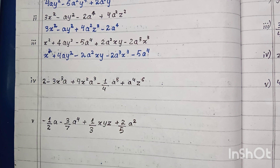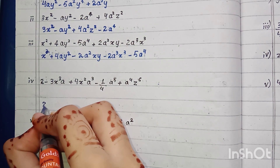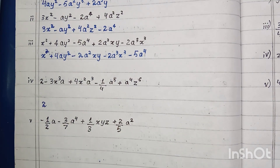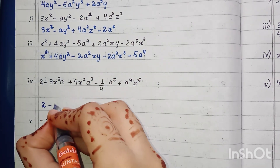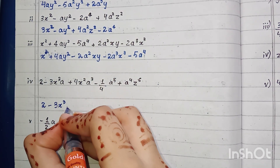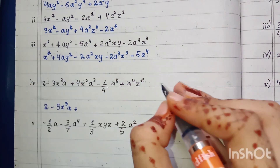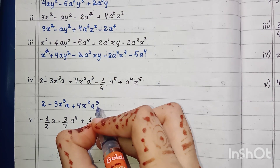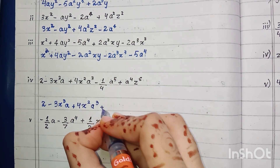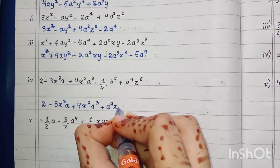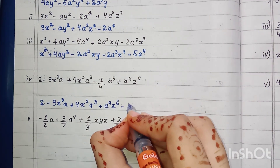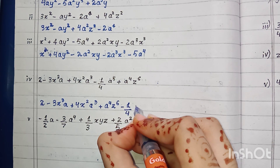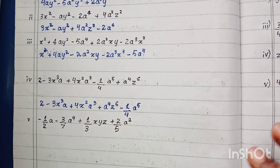In part four, we write minus 3x³, then plus 4x²e³, then e⁴z⁶ because after power 3 comes power 4, and then minus (1/4)e⁵.